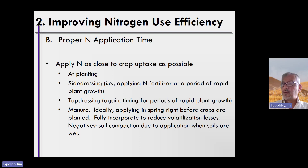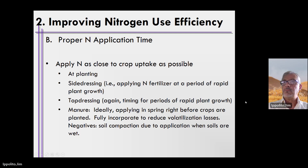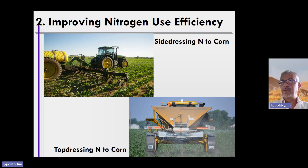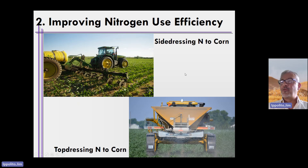Let me share some pictures of what side dressing and top dressing mean, if you're not familiar with these terms. The top left-hand corner picture is called side dressing — this is side dressing nitrogen to corn. We call it side dressing because the fertilizer is being placed to the side of the corn plant itself.